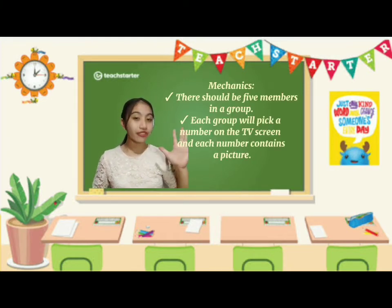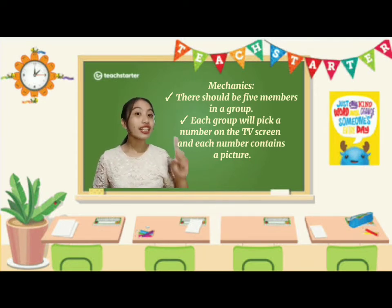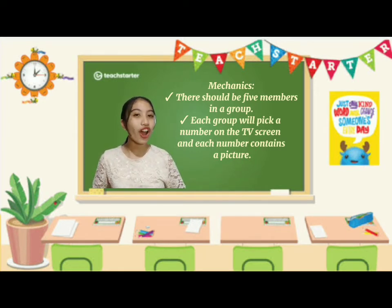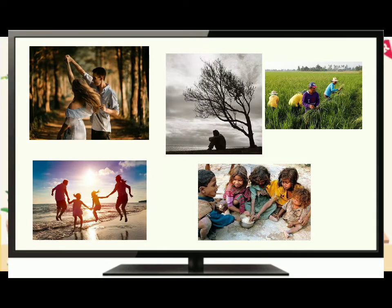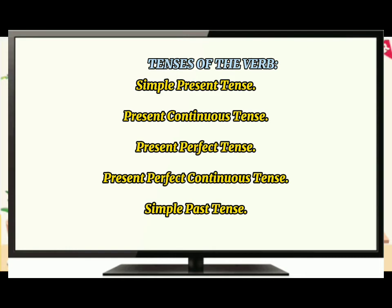There should be five members in the group. Each group will pick a number on the TV screen and each number contains a picture. Out of the given picture, each group will make a story with a twist because they will use a specific tense of a verb in the entire story.